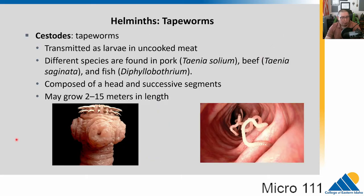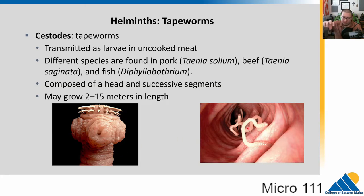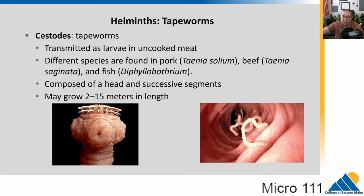Tapeworms are another form of worm — the cestodes. Their larvae are transmitted in undercooked meat. When you eat undercooked meat, you ingest the larvae, which make their way to the intestines where they attach with nasty spikes and suckers. Below the head, segments just keep growing longer and longer. There are different species found in different animals — pork, beef, and fish all have unique species. These can grow very long: two to fifteen meters in length, that's over thirty feet. They live in the intestines and extract nutrients from the host.